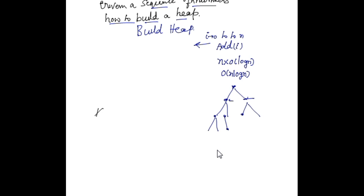This entire function can be written as i equals 1 to n, where you essentially call bottom-up heapify, sending the heap and i. From each of these numbers — from the first one — if you call the bottom-up heapify function, nothing really happens. But after that, from i equals 1 to n, you call the bottom-up heapify function.